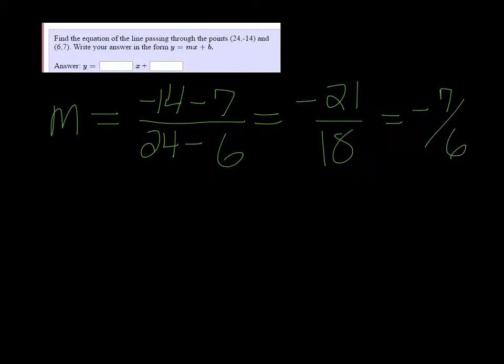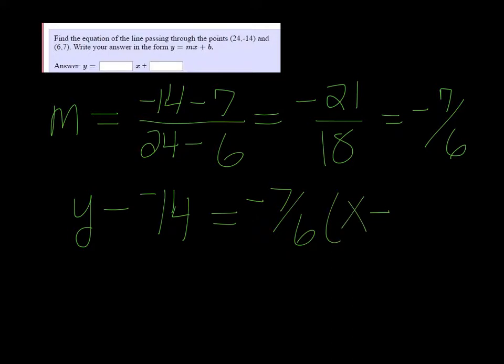So we have our slope. We just need to use one of those points in the equation of a line formula to find what b is. So we have y minus y1. I'm going to use the first point. So that's y minus negative 14 is equal to negative 7 over 6 times x minus 24.